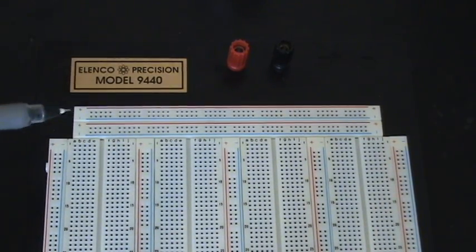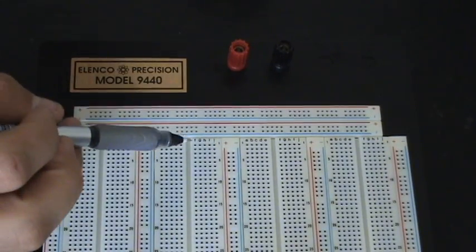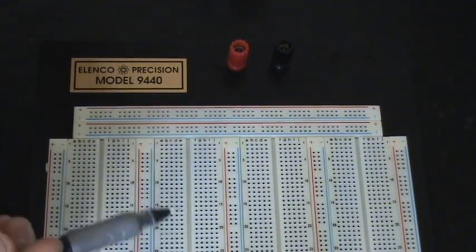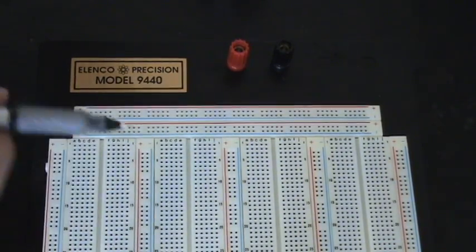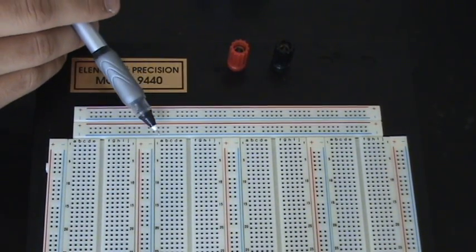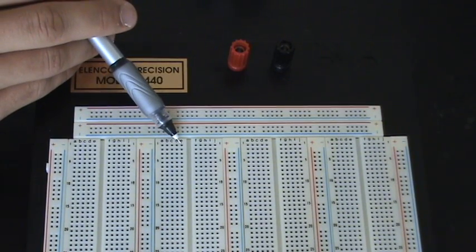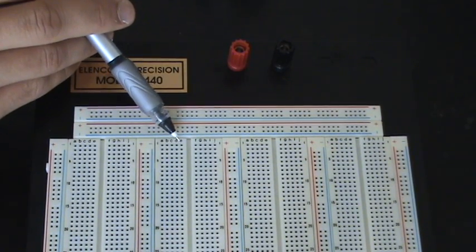And why this is easy is because instead of connecting wire to wire from alligator clips or soldering or anything like that, what you have to do to use this is simply push one wire into one of these holes and another wire into another one of these holes and they connect.